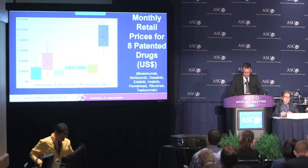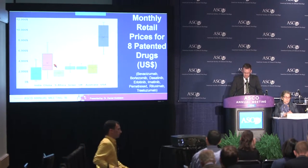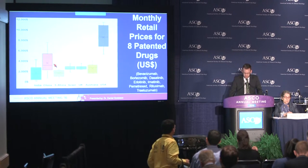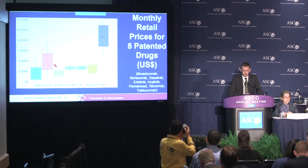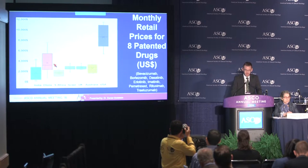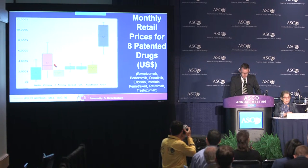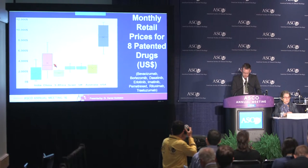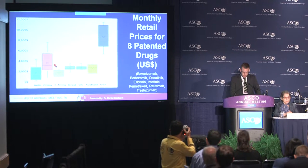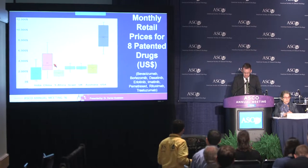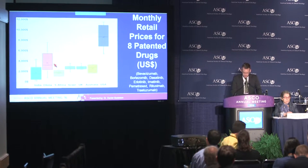This box and whisker plot demonstrates the results for the eight patented drugs. Additional data will be released during the scientific session for the generic drugs in our analysis, and I'd encourage you to attend that to see those results also. The horizontal bar in each box is the median — these values are perhaps the most important values here. The X is the mean, the box demonstrates the interquartile range, and the vertical lines or whiskers demonstrate the range of values.